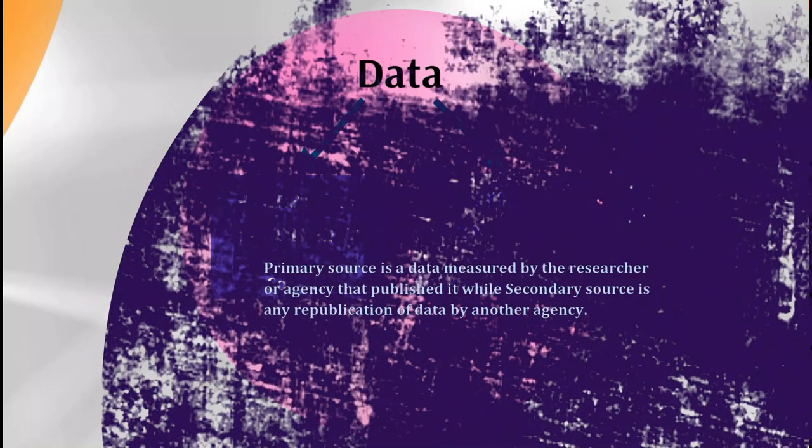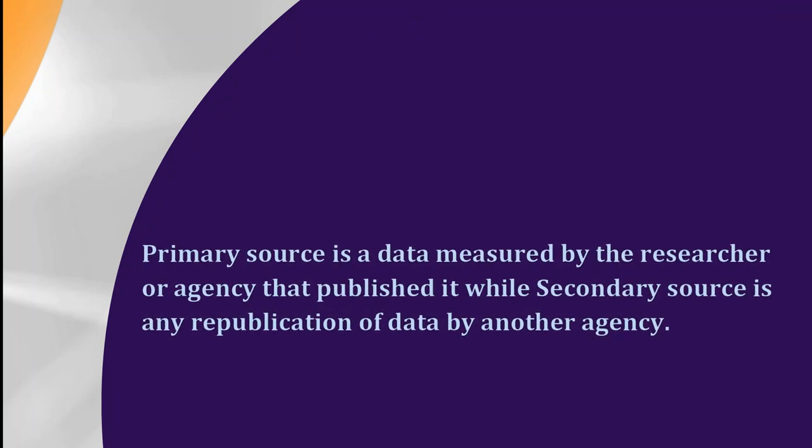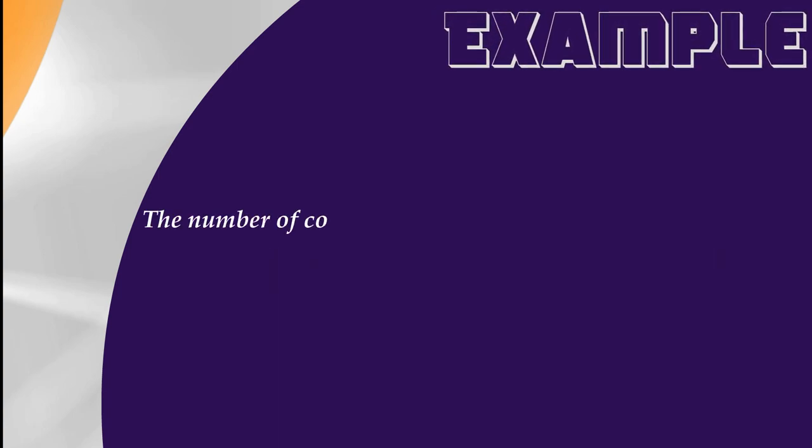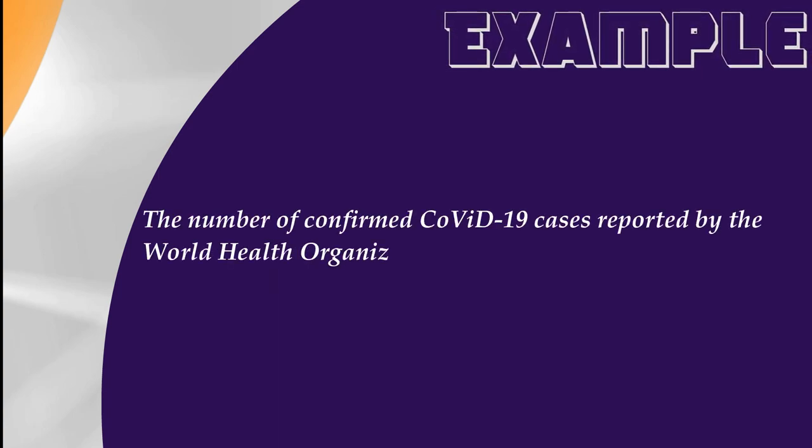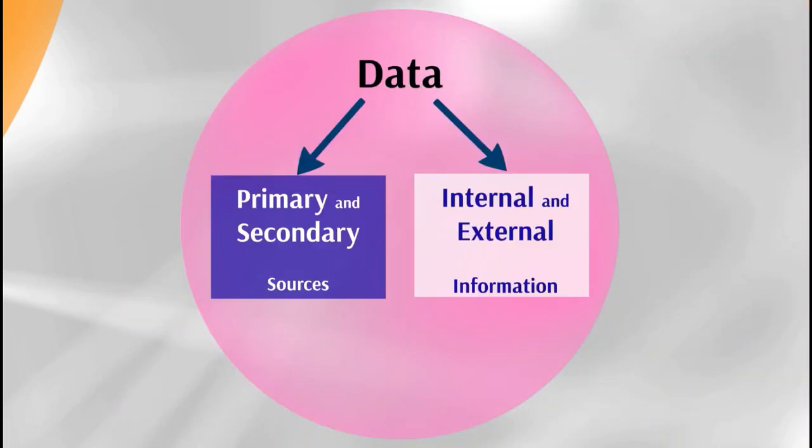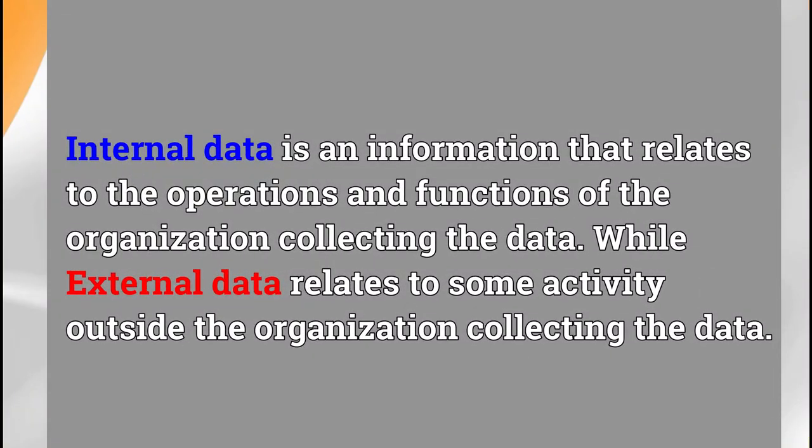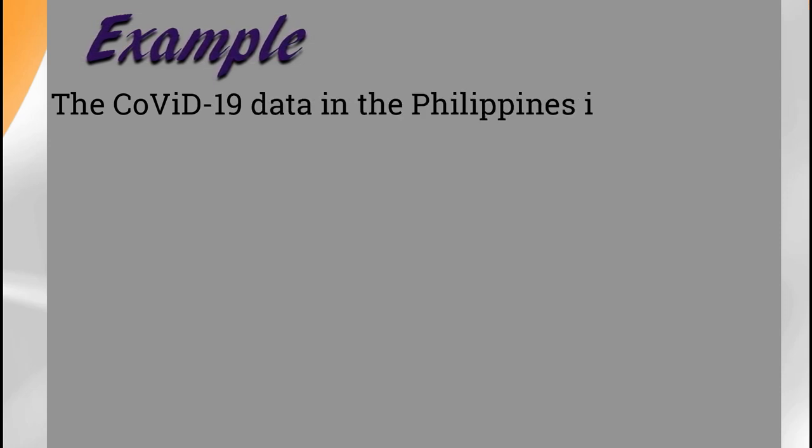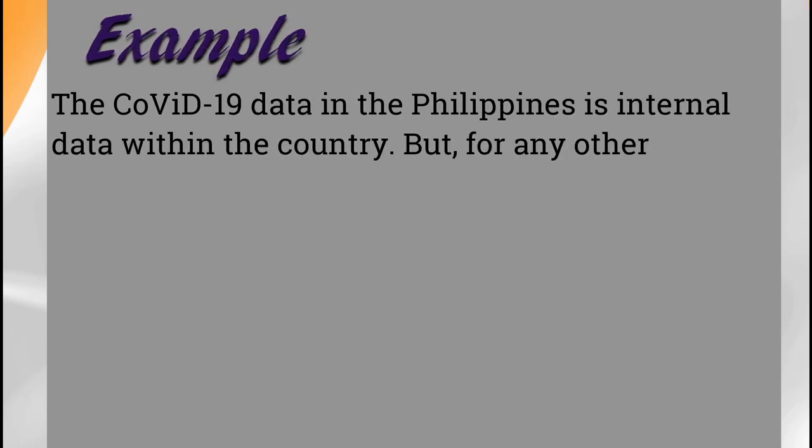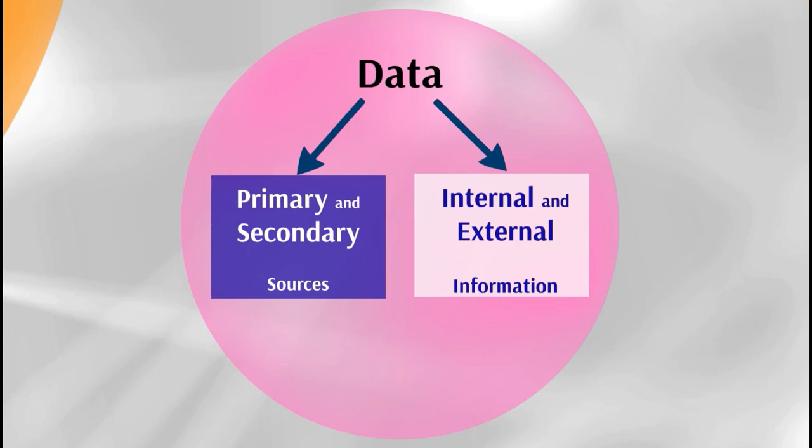Primary source is data measured by the researcher or agency that published it, while secondary source is any republication of data by another agency. For example, the number of confirmed COVID-19 cases reported by the World Health Organization are primary sources. Internal data relates to the operations of the organization collecting the data, while external data relates to activity outside the organization. For example, the COVID-19 data in the Philippines is internal data within the country but for other countries in Southeast Asia it is external data.